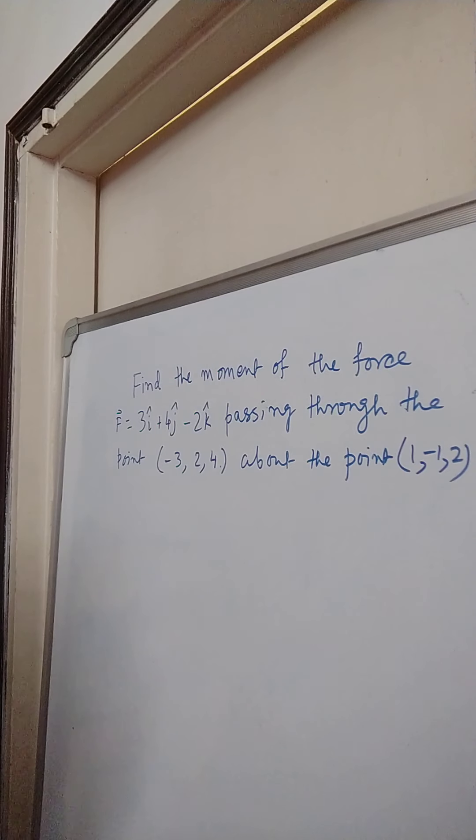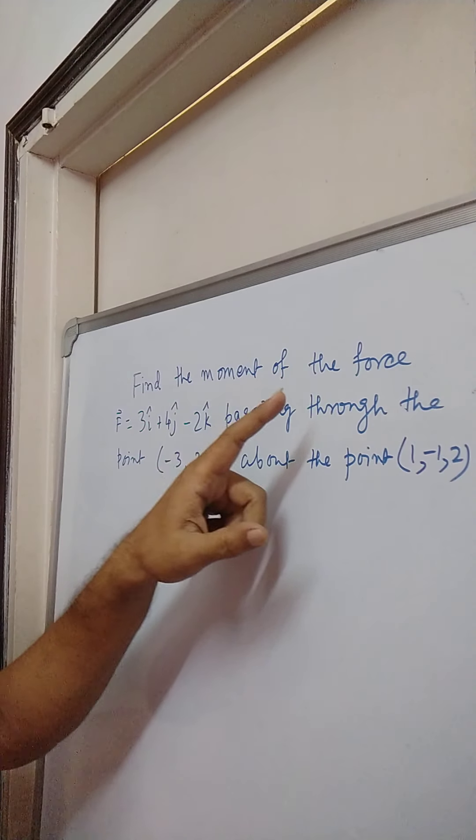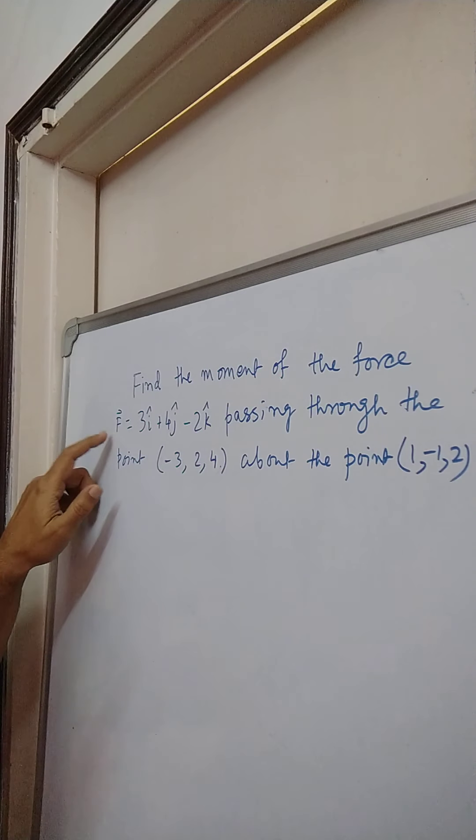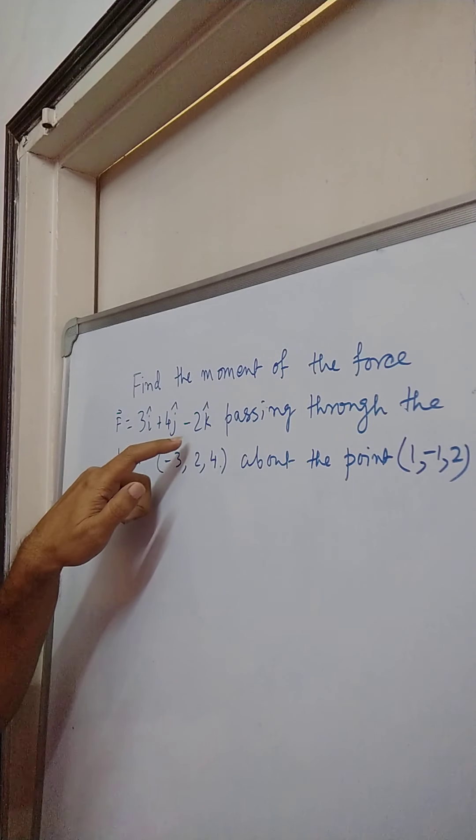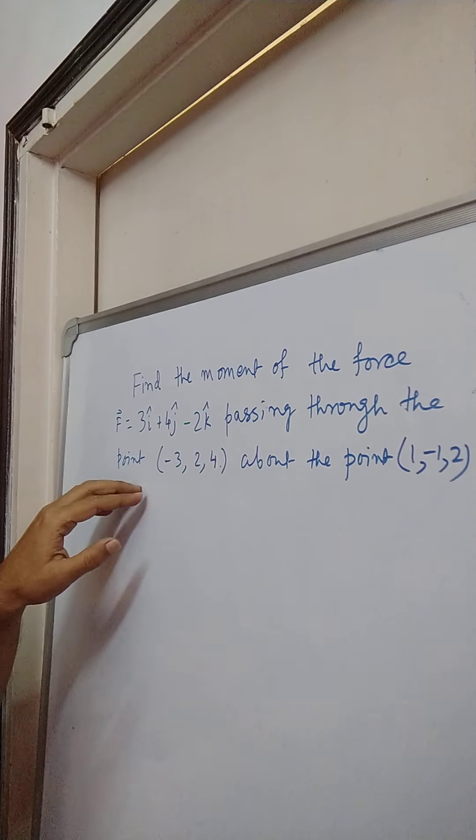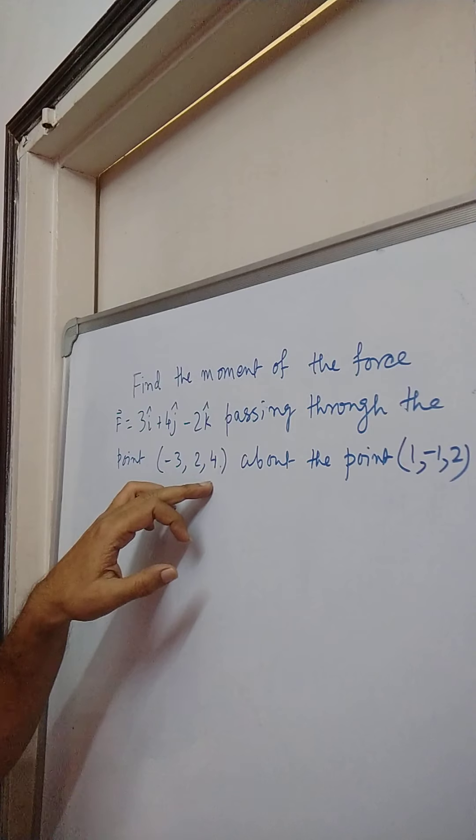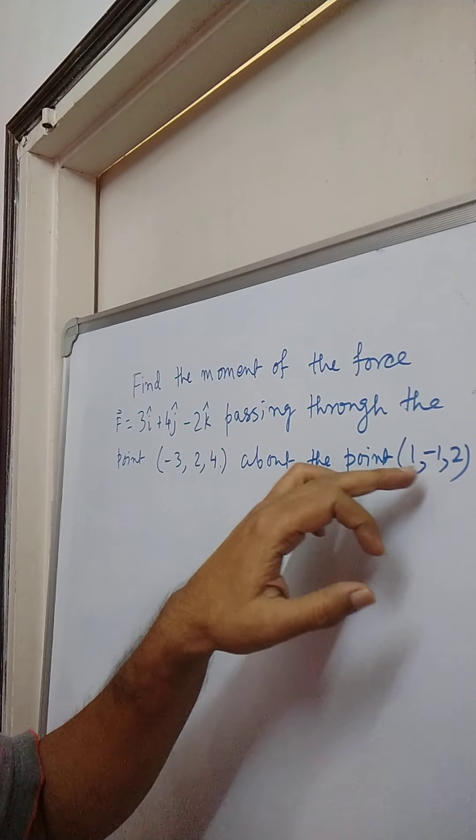Let us solve this problem. Find the moment of the force if 3i plus 4j cap minus 2k cap passing through the point minus 3, 2, 4 about the point 1 minus 1, 2.